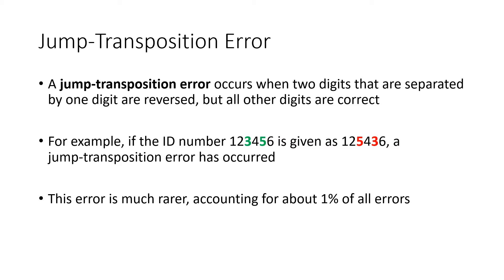Even less common, but still happens, is what's called a jump transposition error. It's like a transposition error in that we're swapping the positions of two digits, but this time instead of the two digits being next to each other, the digits are separated by a digit in between. So again, our ID number 1, 2, 3, 4, 5, 6 — if we entered that as 1, 2, 5, 4, 3, 6, what we've done is swapped the 3 and the 5, which were not next to each other but were separated by a digit in between. That's fairly rare, but still something we want to think about.